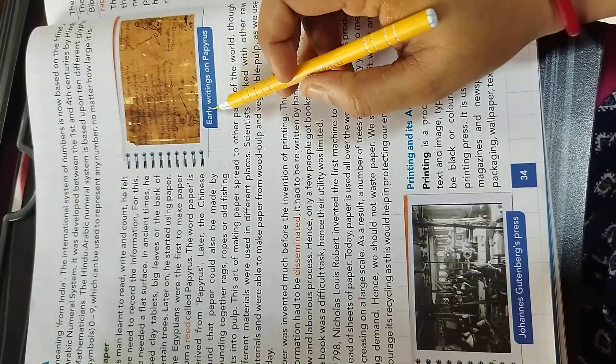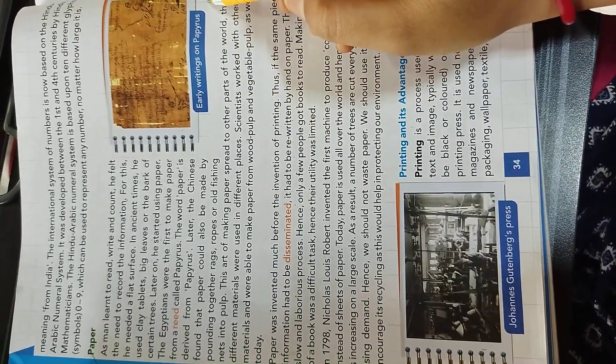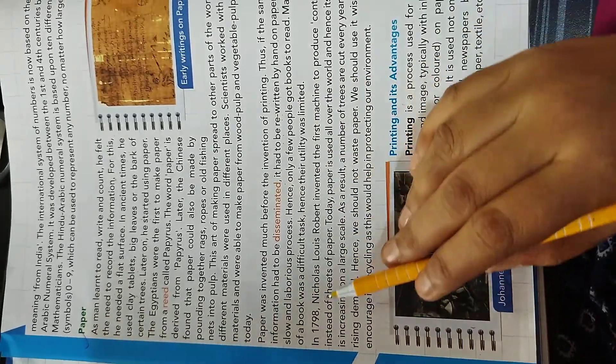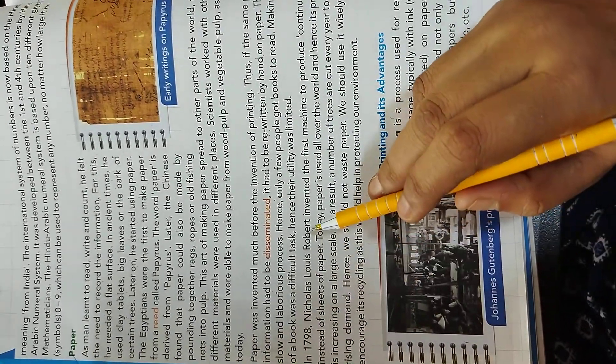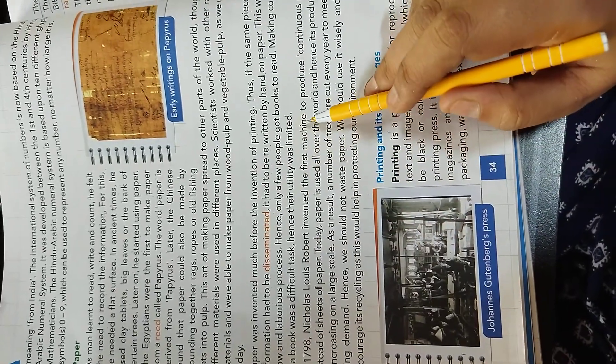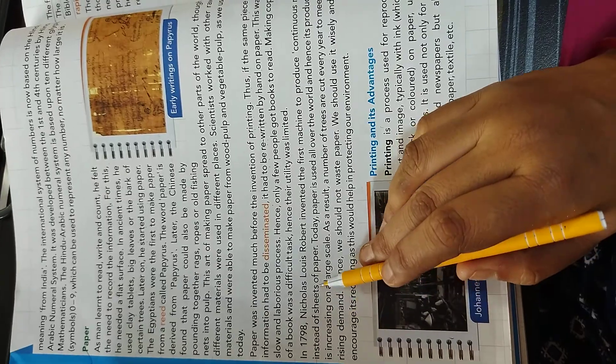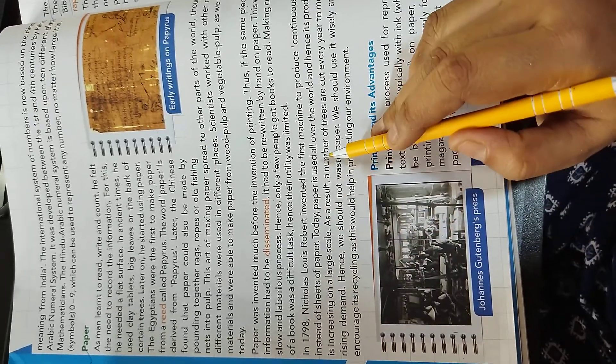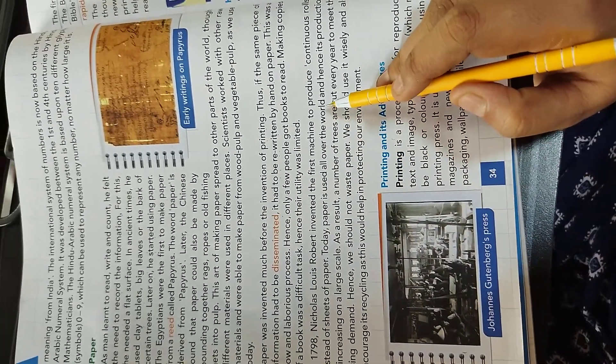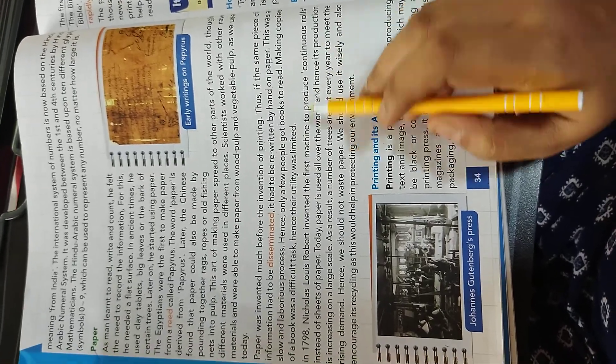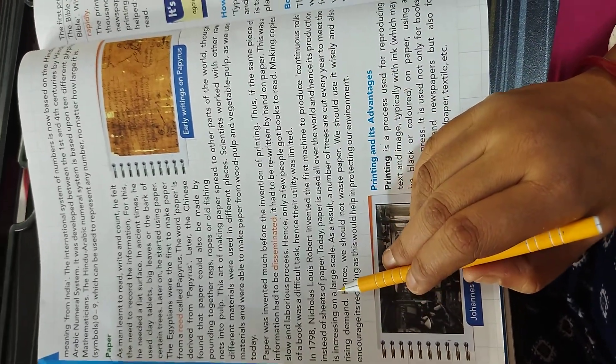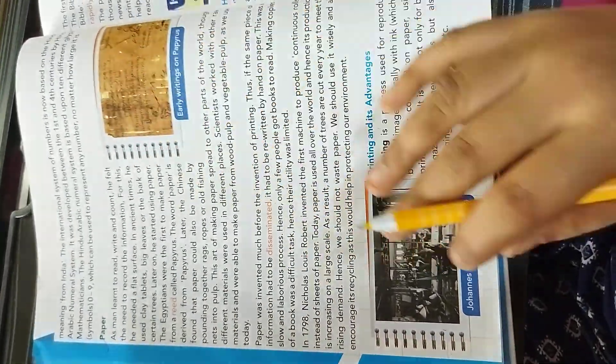This art of making paper spread to other parts of the world through different material were used in different places. Scientists worked with other raw materials and were able to make paper from wood pulp and vegetable pulp as we use today. In 1798, Nicholas Louis Robert invented the first machine to produce continuous roll instead of sheet of paper. Today, paper is used all over the world and hence its production is increasing on a large scale.